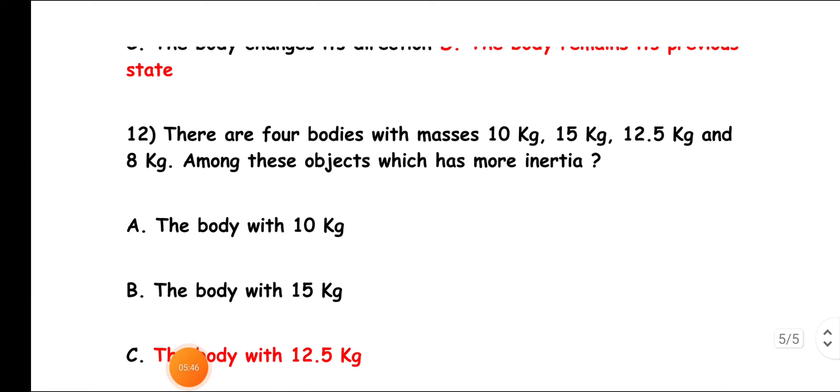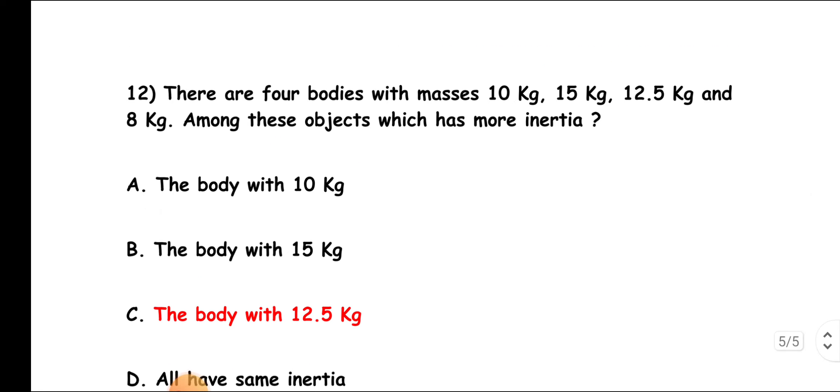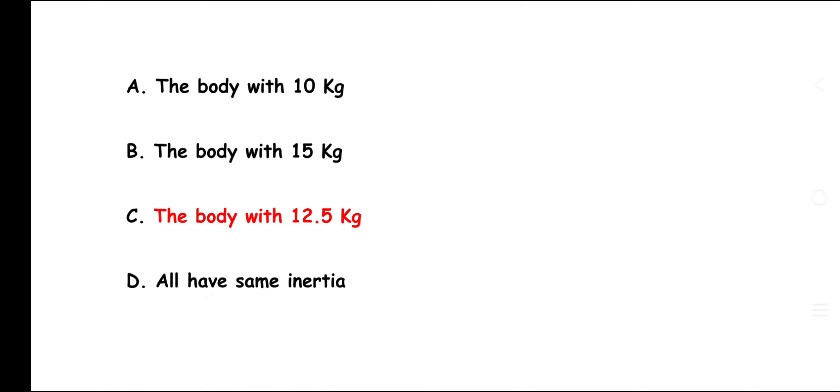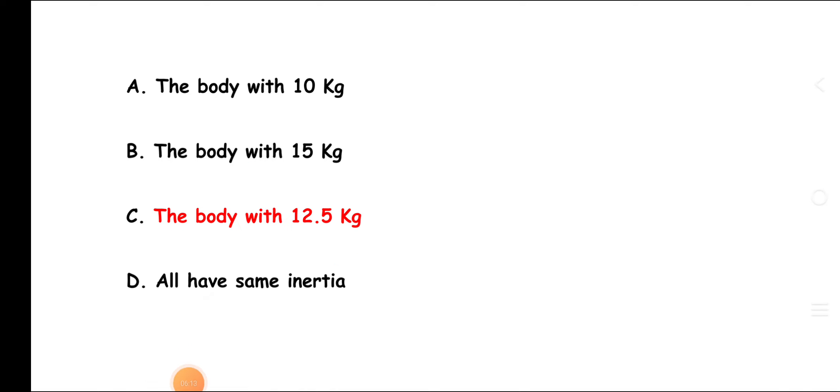Question 12: There are four bodies with masses 10 kg, 15 kg, 12.5 kg, and 8 kg. Among these objects, which has more inertia? Right answer is C, the body with 15 kg, as inertia is directly proportional to mass.